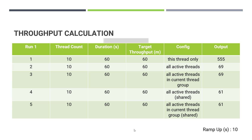So those are the five different options available. The only things you need to keep in mind are to place the constant throughput timer in the right location and to configure it using the right throughput calculation algorithm.